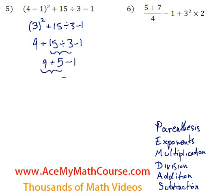Then addition, so 9 plus 5 is 14, minus 1 is 13. That's it.